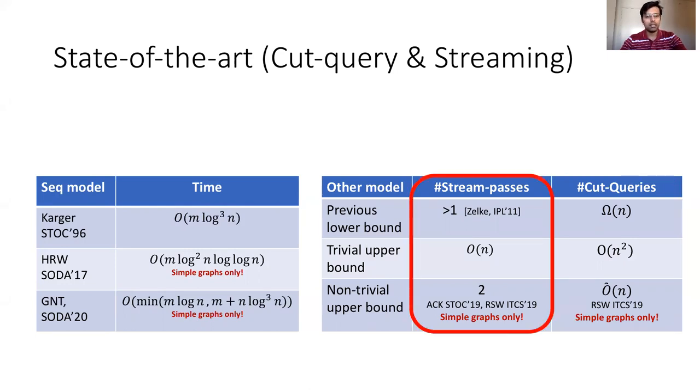For streaming, Sarkar and others observed that Rubinstein's algorithm can be adapted to the semi-streaming model to get a two-pass streaming algorithm. Because of the restriction of the cut query algorithm, the streaming algorithm also works only for simple graphs. The trivial upper bound is order n passes. This is because in each pass, we can maintain order n cut counters. So to find the minimum among n squared many cuts, we need order n passes.